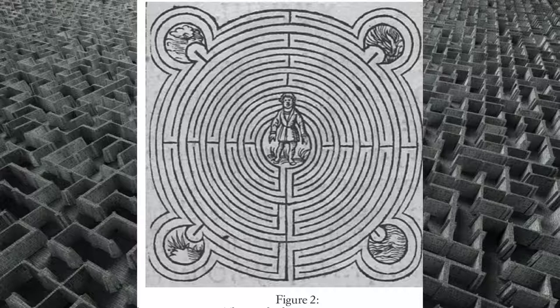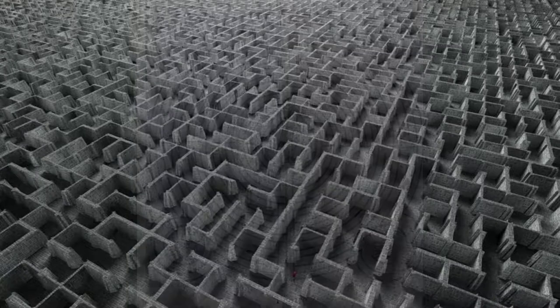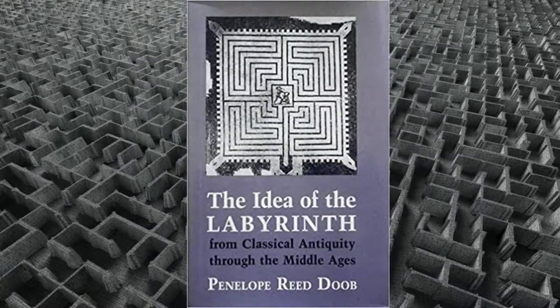While for the most part terms like mazes and labyrinths are used interchangeably, they do have some distinct characteristics. In the first video, we pointed out the main distinguishing feature between a maze, which is usually shown as an intricate puzzle, and a labyrinth, which is a single path. In Penelope Redube's book, The Idea of the Labyrinth from Classical Antiquity through the Middle Ages, she offers two simple terms to solidify this difference: unicursal or multicursal path.